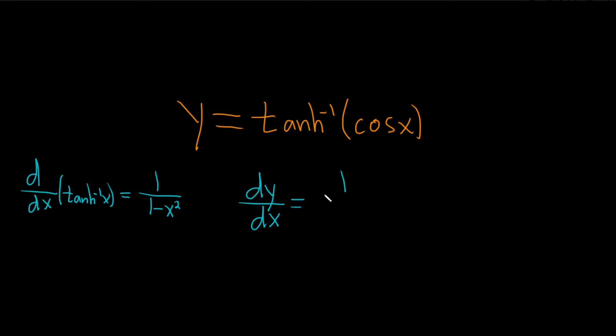So it'll be 1 over 1 minus, and now instead of x, it's cosine x, this is cosine squared x, just like that, and then times the derivative of the inside. So the inside function is cosine, so its derivative is negative sin, so this is negative sin x.